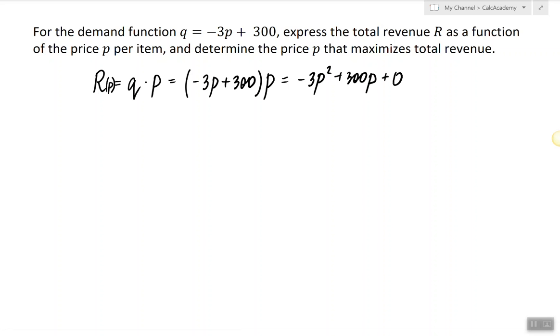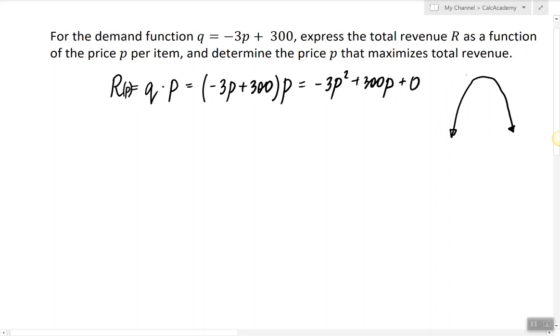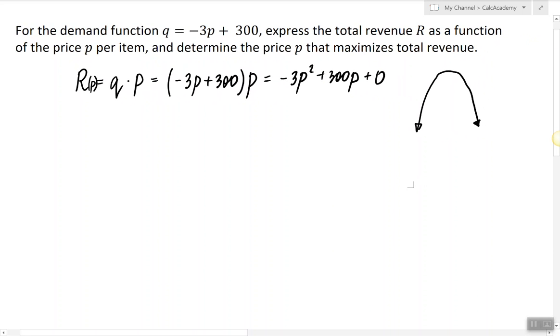The next thing I notice is that the leading coefficient here is negative, and negative means that if we were to graph this parabola, then we will obtain a graph that has a maximum output which occurs at the vertex.